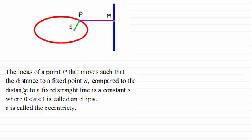Remember that it is the locus of a point P that moves such that the distance to a fixed point S compared to the distance to a fixed straight line is a constant which we call E, where E is between 0 and 1, and this will define an ellipse. E is called the eccentricity.